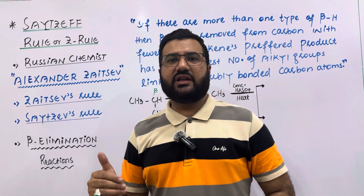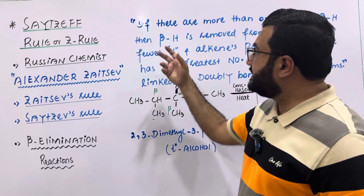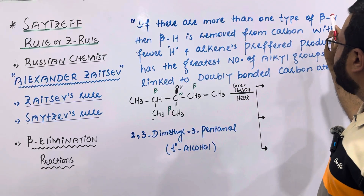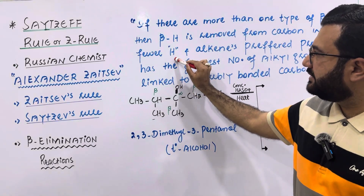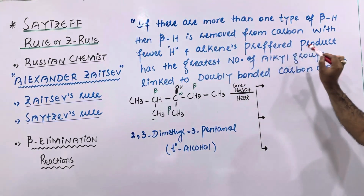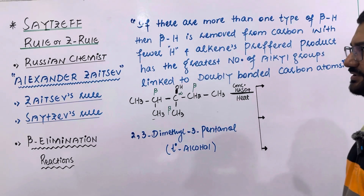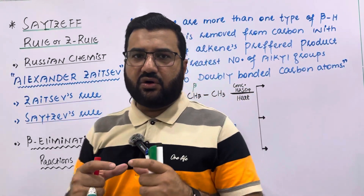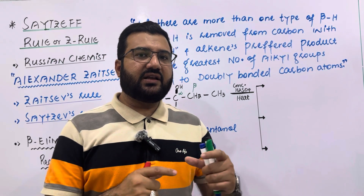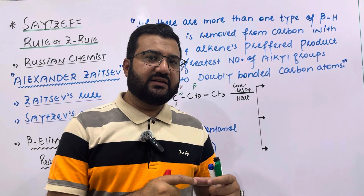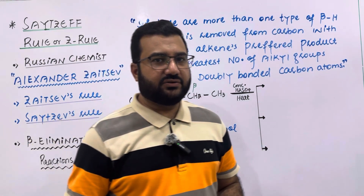This rule is only applicable to the beta elimination reactions, and this rule states that if there are more than one type of beta hydrogen, then the beta hydrogen is removed from the carbon with fewer hydrogen atoms, and the preferred alkene product has the greatest number of alkyl groups linked to the doubly bonded carbon atoms. This means the Zaitsev rule is only applicable to those beta elimination reactions in which there are more than one type of beta carbons with respect to their different hydrogen content.